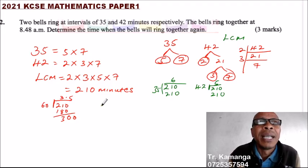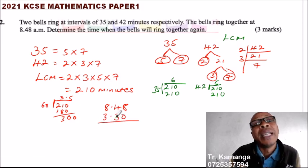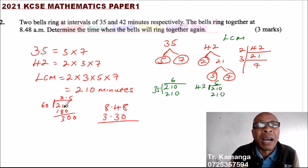3 and a half hours. They rang together at 8:48. So 8:48, you add 3.5, which is the same as 3 hours 30 minutes. 0.5 hours is the same as 30 minutes. This will be 8.